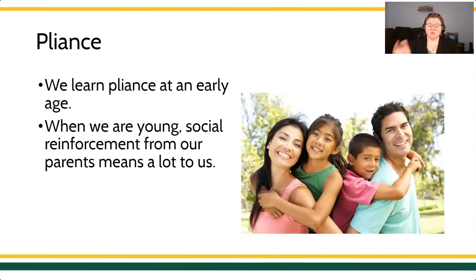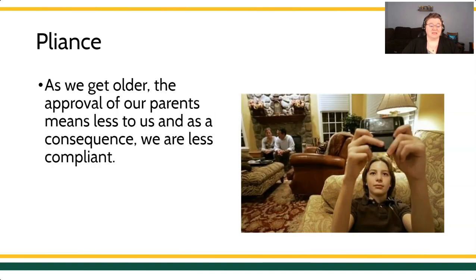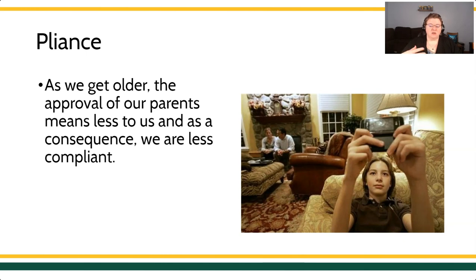We also see pliance because we learn it at such an early age. We learn from when we're very young to follow our parents' instructions. Over time, our parents' esteem and what they think about us comes to mean a little bit less as we start to seek out our peer groups. We become less compliant with our parents as their reinforcers become less powerful. Pliance is simply that the person gives you the instruction because they have the power to deliver the consequence if you follow or don't follow the instruction.